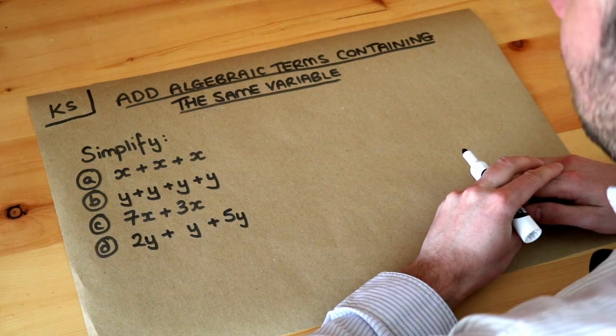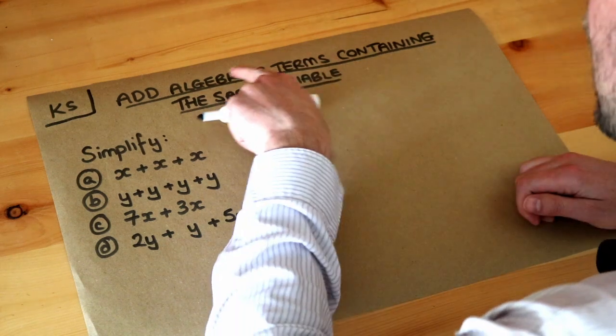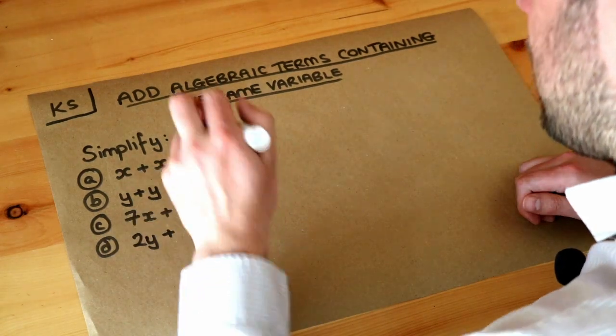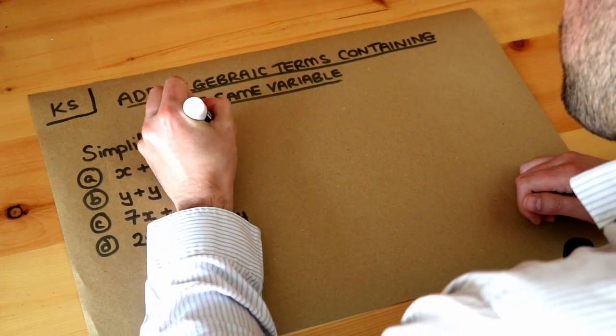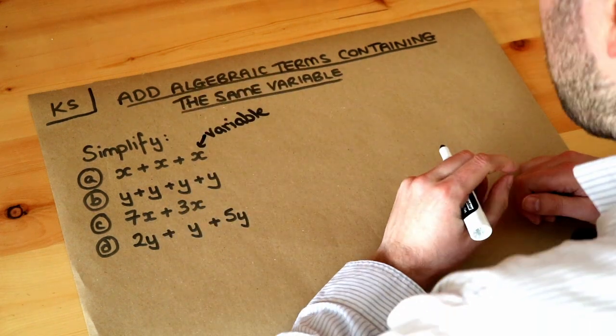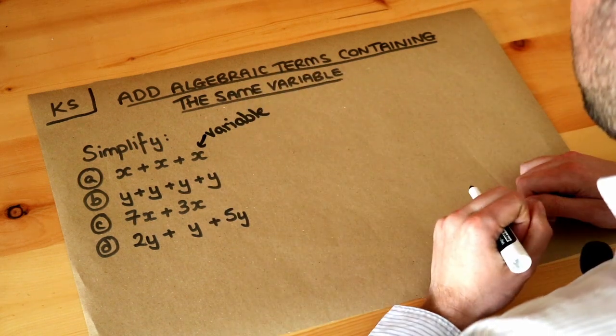Now it's the first video on how we can simplify algebraic expressions. If you have an algebraic term or an algebraic expression it means we've got letters involved. These letters are known as variables and the reason it's called a variable is because its value might vary.